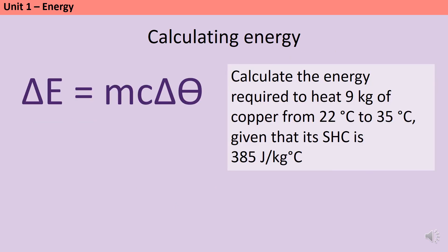A straightforward calculation might ask me to calculate the energy required to heat up nine kilograms of copper from 22 degrees to 35 degrees, given that its specific heat capacity is 385 joules per kilogram degree C. Looking at my equation, the first thing I need to do is work out the change in temperature. To go from 22 degrees to 35 degrees is a temperature change of 13 degrees C. Now I have all the terms of the equation, I can substitute these in: mass is nine kilograms, multiplied by specific heat capacity of 385, multiplied by temperature change of 13.